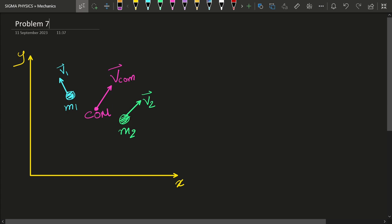Consider two masses m1 and m2 moving in some random direction with velocities v1 and v2 respectively. Then the velocity of the center of mass of these two masses will be given by this expression.